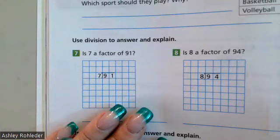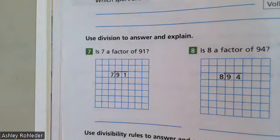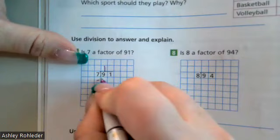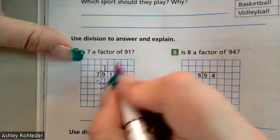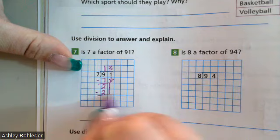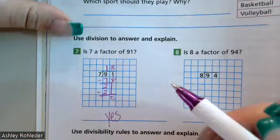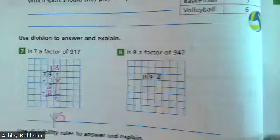Is seven a factor of 29? They want us to use division to explain. How many times can seven go into 29? One. What do I subtract? Seven. Bring down the one. How many times can seven go into 21? Three. And I subtract and get zero. So is seven a factor of 91? Yes. How do we know? There was no remainder. So seven times 13 is 91.